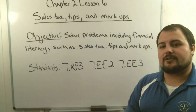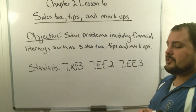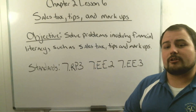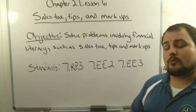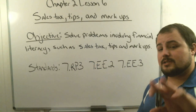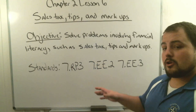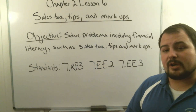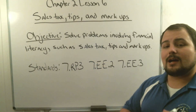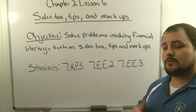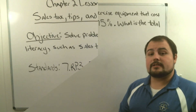Markups are when the price of something goes up. The standards we're addressing are seventh grade ratios and proportions standard three, equivalent expressions standard two, and standard three. We're going to go ahead and jump right into our first example and talk about how we solve these problems.